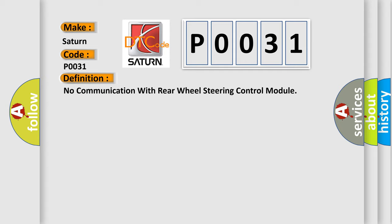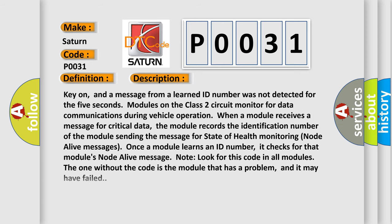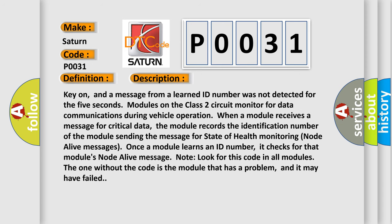And now this is a short description of this DTC code. Key on, and a message from a learned ID number was not detected for the five seconds. Modules on the class two circuit monitor for data communications during vehicle operation. When a module receives a message for critical data, the module records the identification number of the module sending the message for state of health monitoring node alive messages.